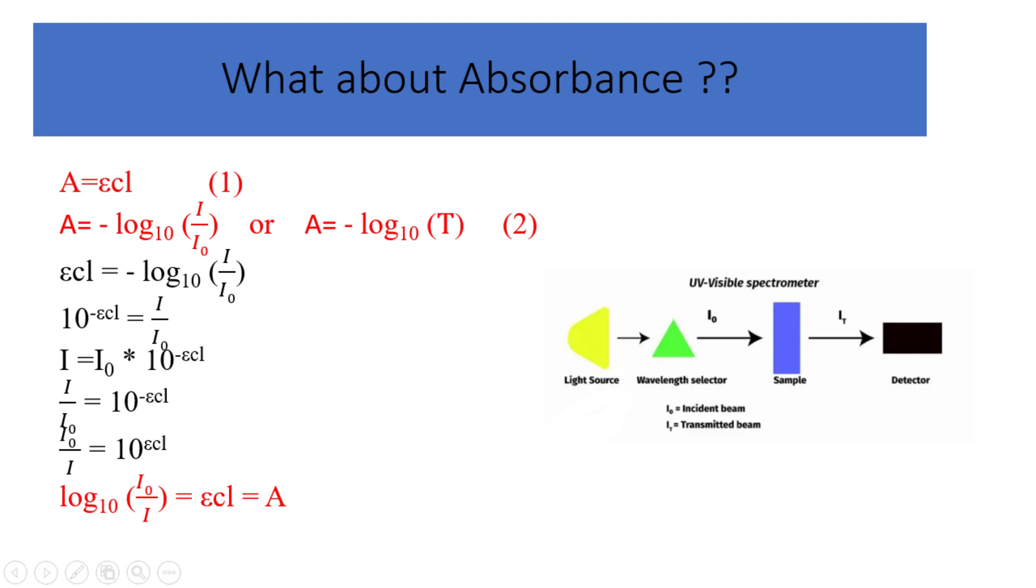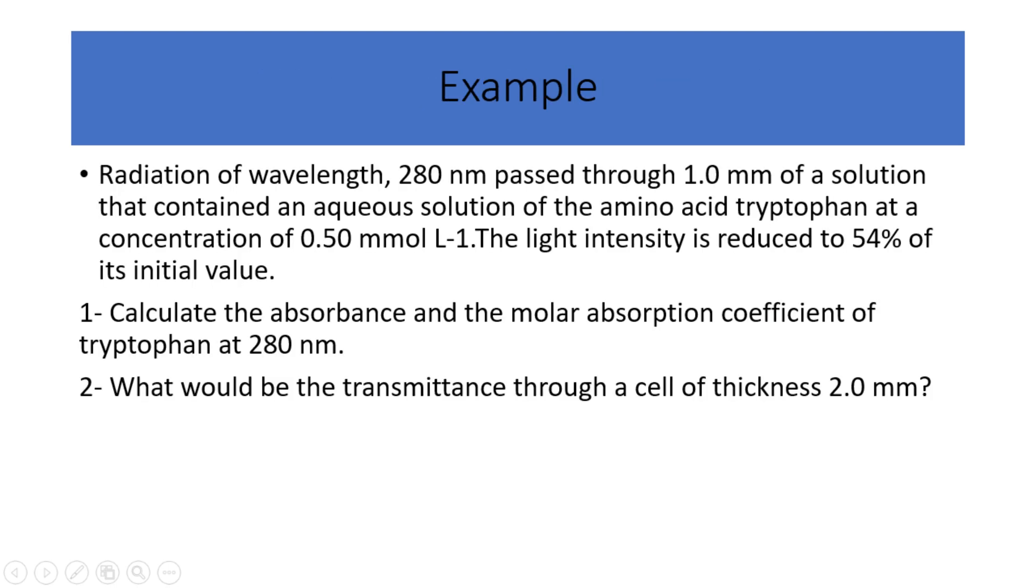To clarify the previous mathematical equations, let us take a numerical example. Radiation of wavelength, 280 nanometers passed through 1.0 millimeters of a solution that contained an aqueous solution of the amino acid tryptophan at a concentration of 0.50 millimoles per liter. The light intensity is reduced to 54 percent of its initial value. 1. Calculate the absorbance and the molar absorption coefficient of tryptophan at 280 nanometers. 2. What would be the transmittance through a cell of thickness 2.0 millimoles?